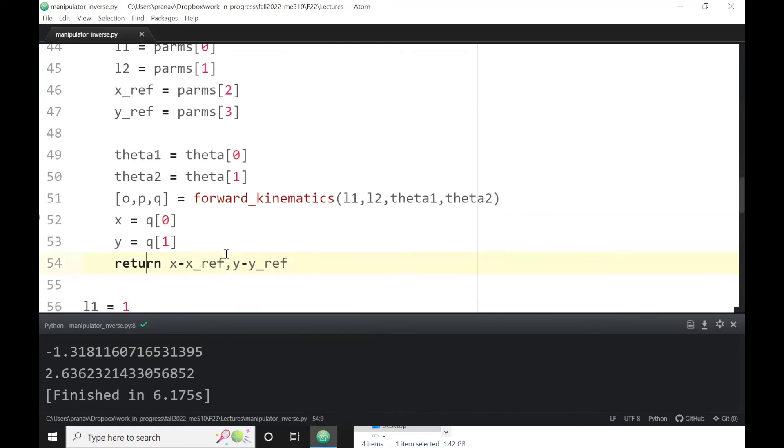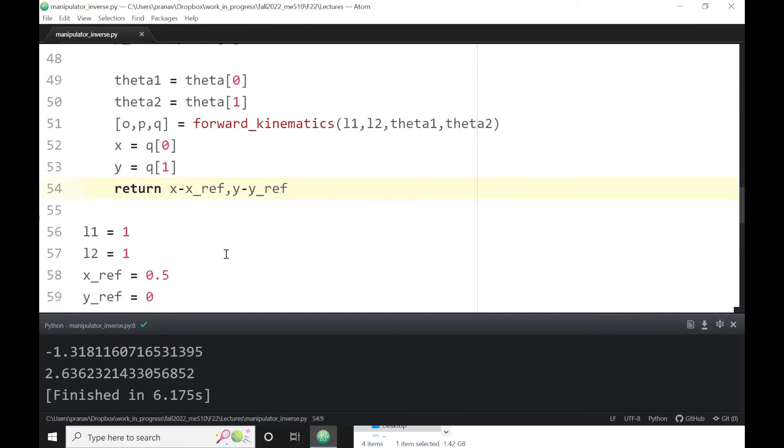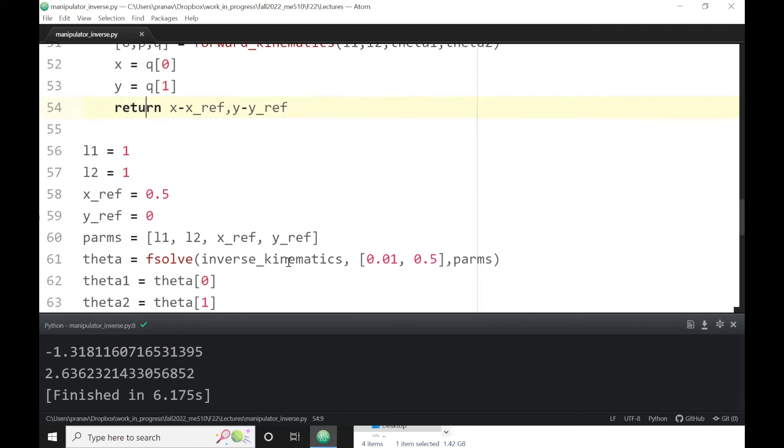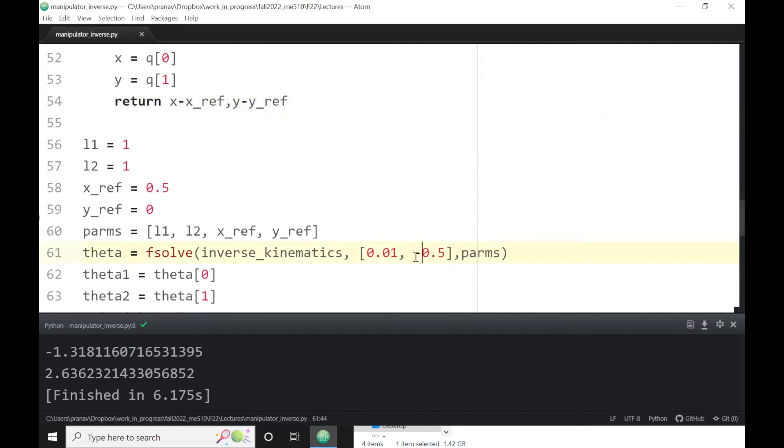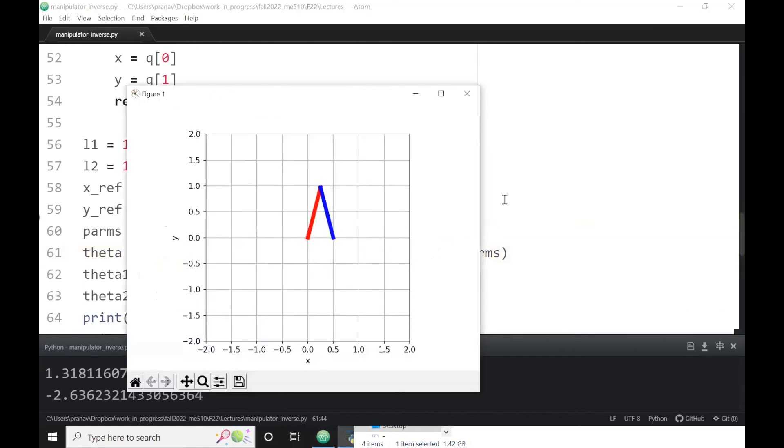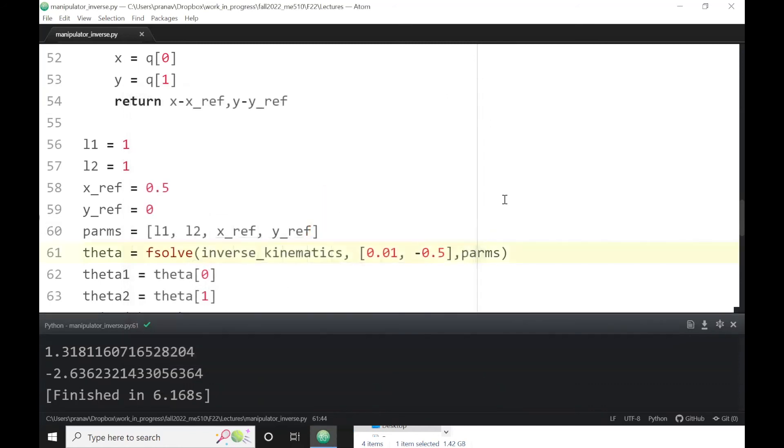So it basically runs this non-linear solver - I don't know what it is using - and gives you the answer. Now the answer is θ₁ is minus 1.318, θ₂ is 2.63. I believe you should get the other solution if you try to change this guess. So in this case I know that there are two solutions, but for a more complicated geometry you couldn't quite know - you have to keep trying.